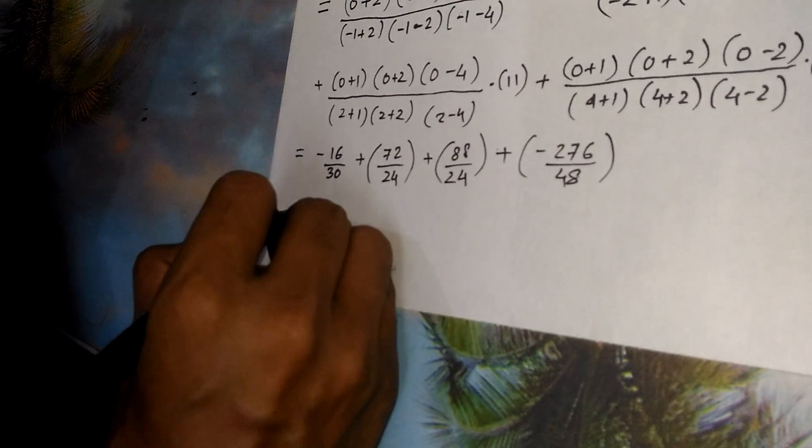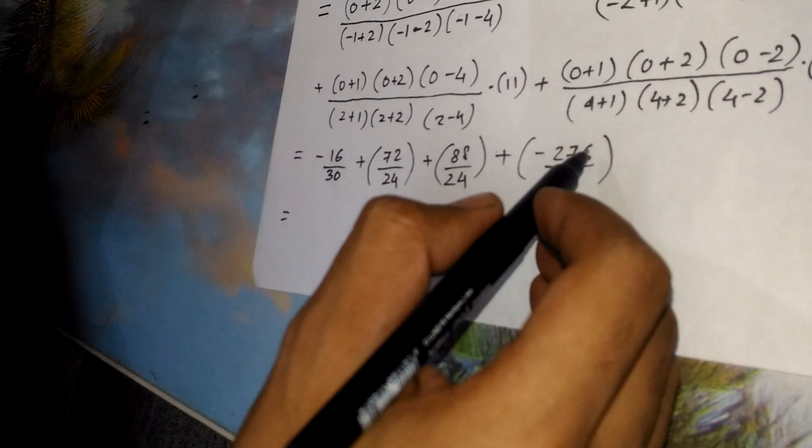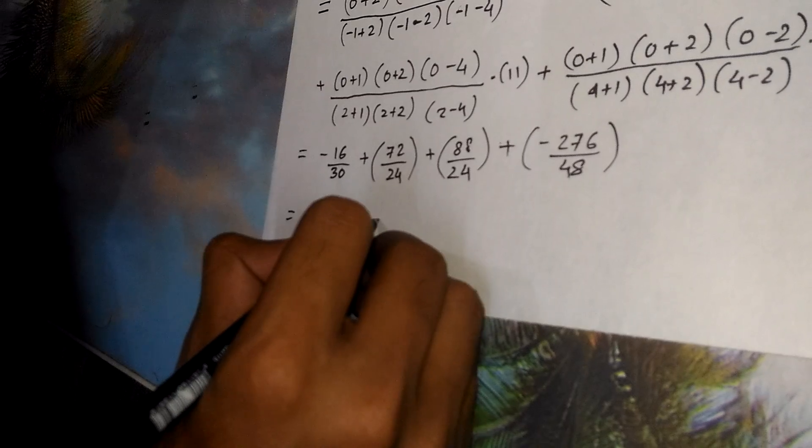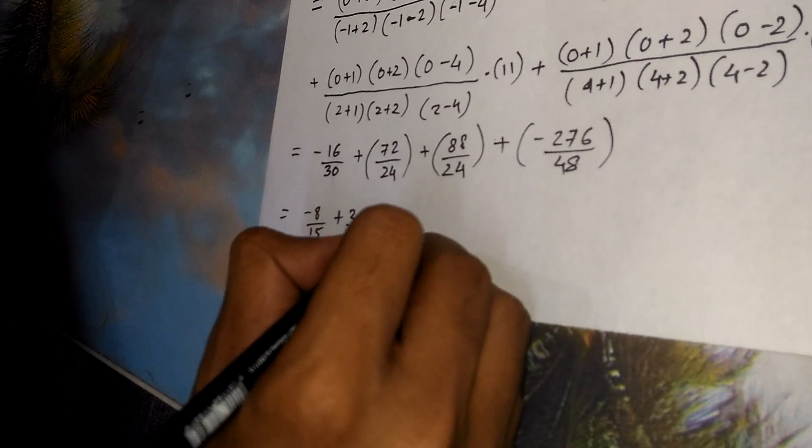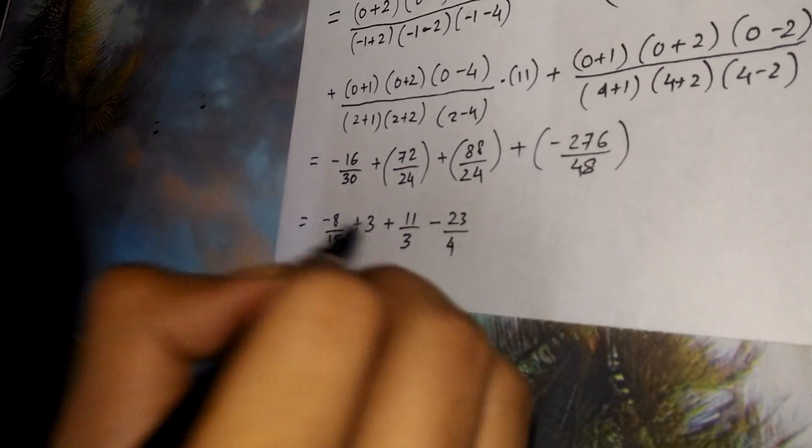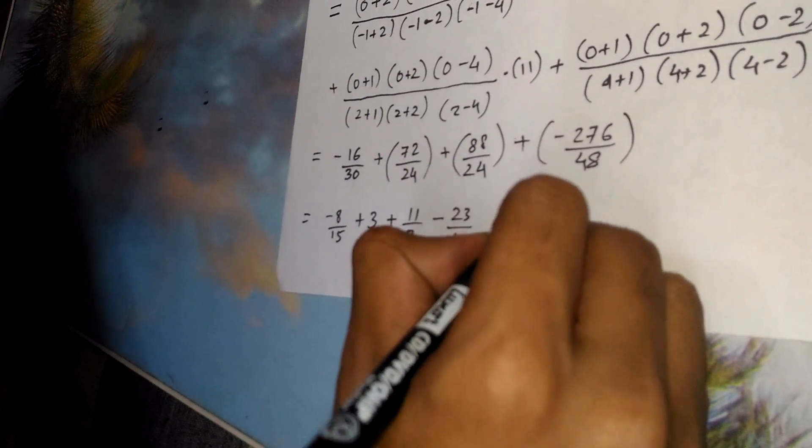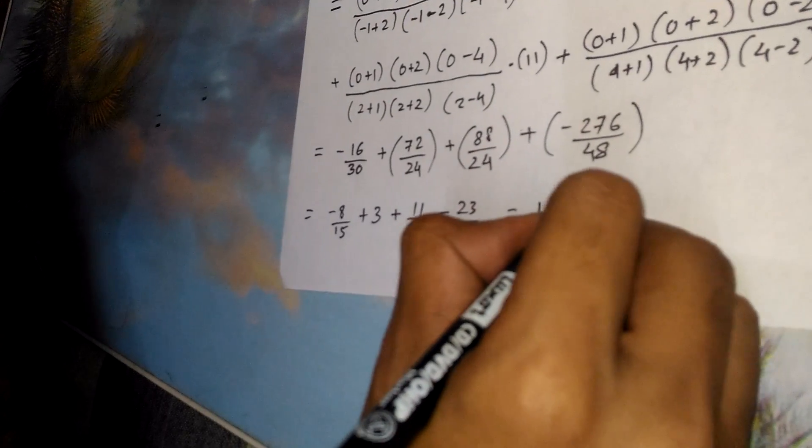From the last step I get minus 276 by 48. Now solving these fractional terms I get minus 8 by 15 plus 3 plus 11 by 3 minus 23 by 4. Solving this the final answer that I get is 1.45.